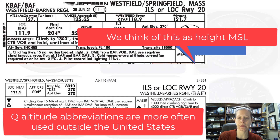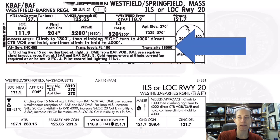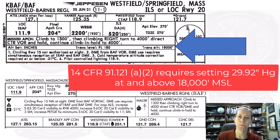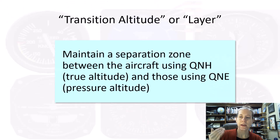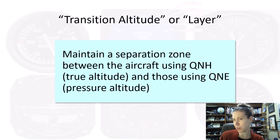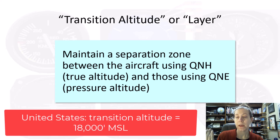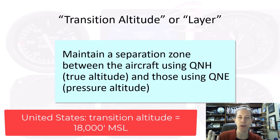So if we go back to this chart, in the United States you set your altimeter to pressure altitude — 29.92 is our standard setting in the U.S., inches of mercury — and we set it at 18,000 feet. That means in the U.S., our transition altitude or our transition layer is at 18,000 feet. During a climb, that's where you change your altimeter to 29.92.